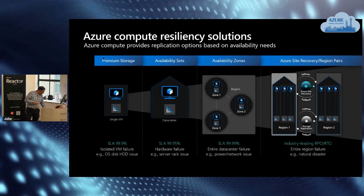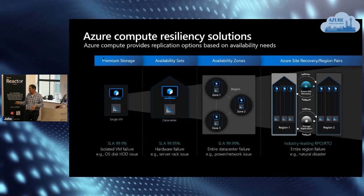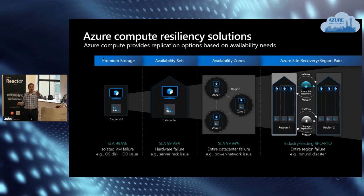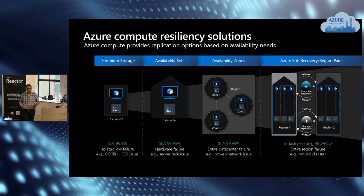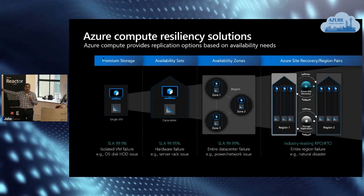For compute, we have VMs. A single VM with premium storage gets a 99.9% SLA — just let it run, no extra configuration needed. Moving to availability sets gives you 99.95%, but you must have multiple VMs. My guidance is multiples of three — putting VMs into an availability set within a zone gets you an extra digit.